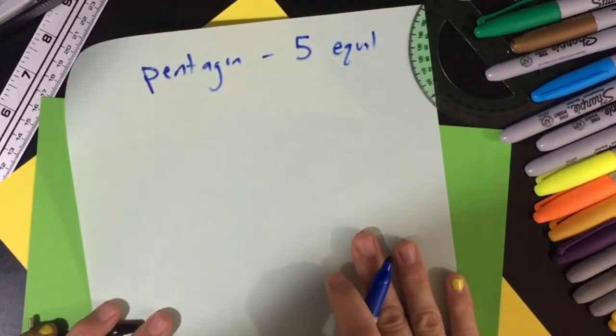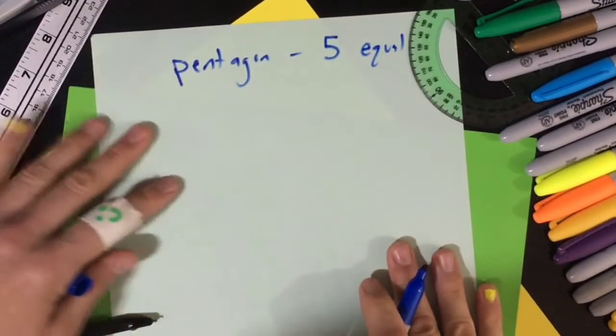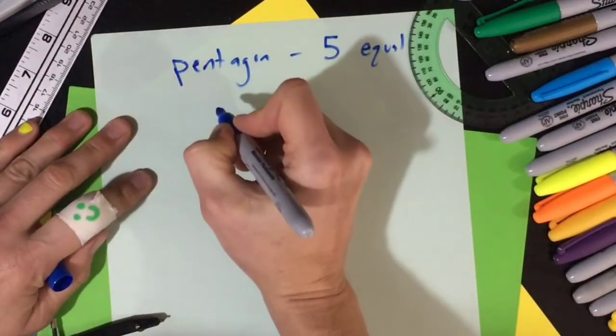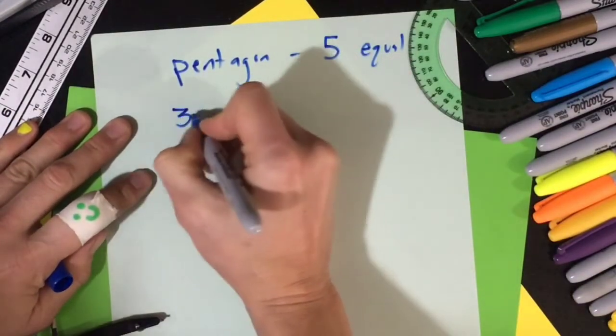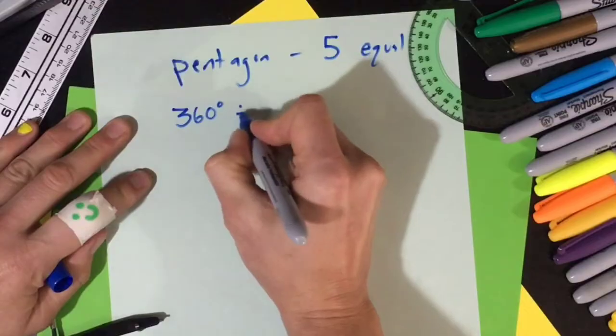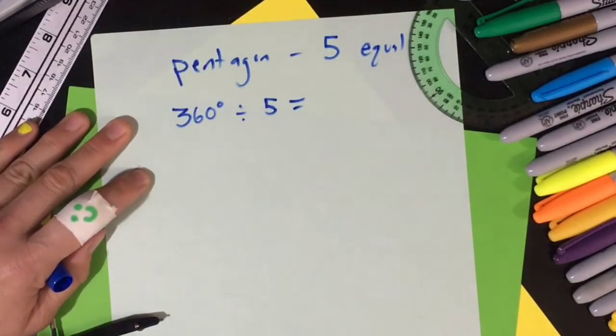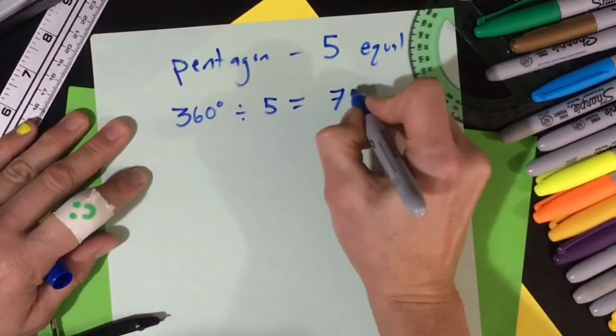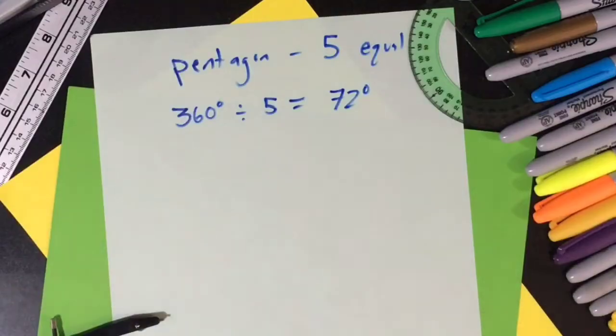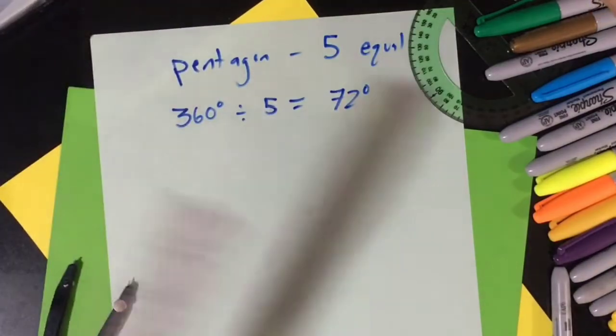And the first step is you have to calculate what the inner angle has to be. So what you have to do is you take 360 degrees and you divide that by the number of sides. So 360 divided by 5 equals, can anyone tell me, 72. Thank you.